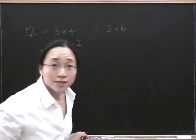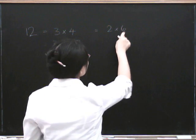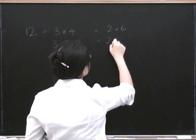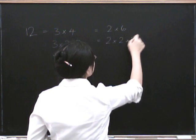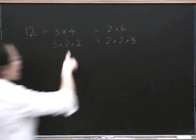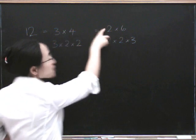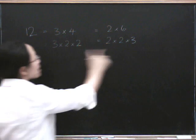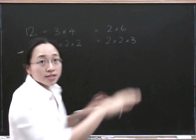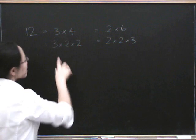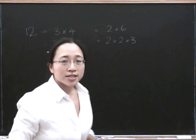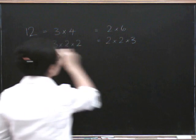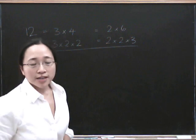What if we'd started by saying 2 times 6 first? Well, we know that 6 is 2 times 3, so we get 2 times 2 times 3. And the thing is that despite the fact that we started this process differently, we ended up with the same thing, just in a slightly different order. So 12, expressed as a product of the smallest possible numbers, has only one way of doing it, no matter how we started.